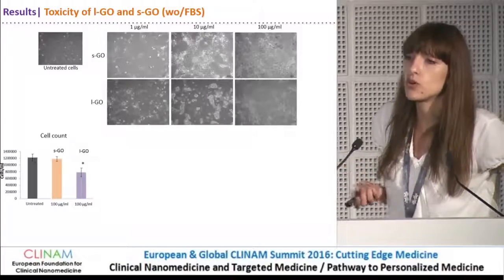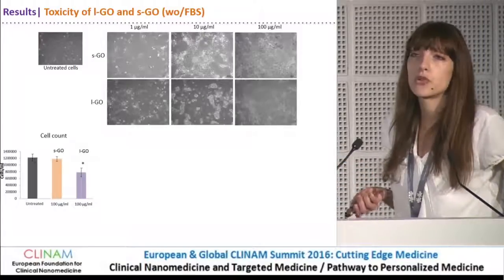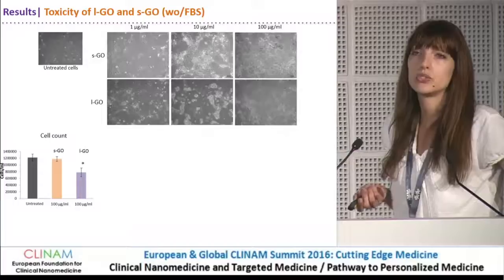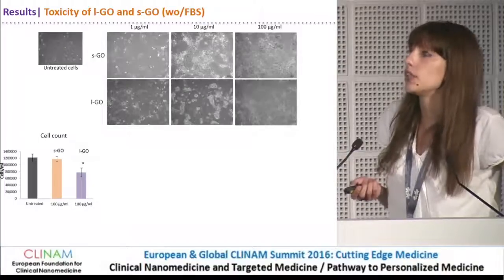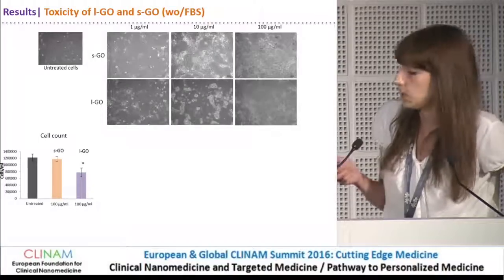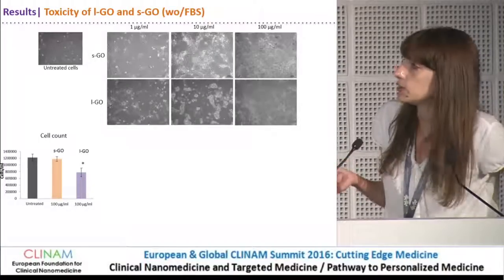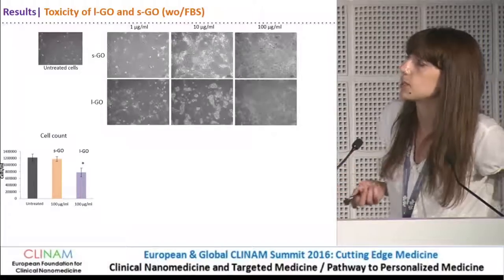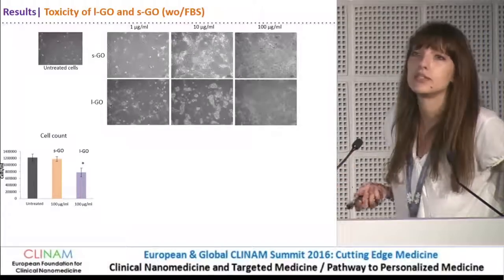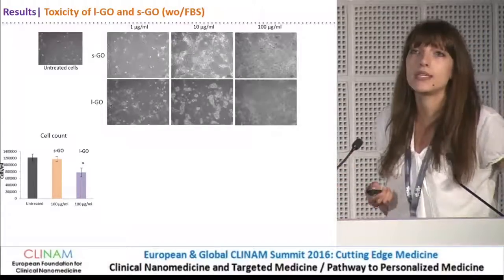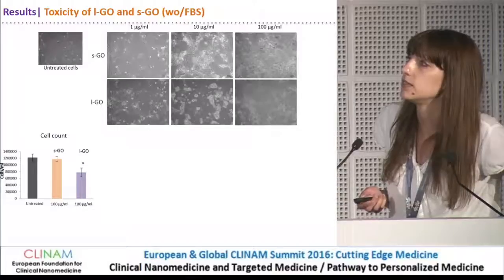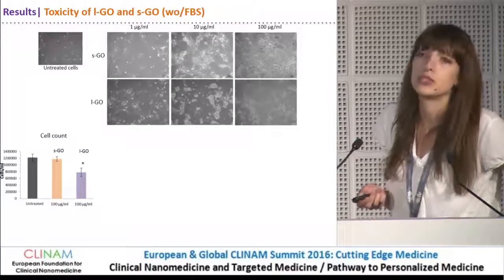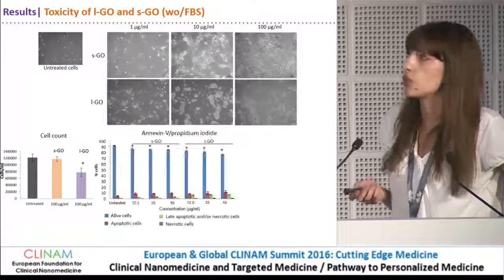In order to confirm this, we performed the cell count using Trypan Blue. And indeed, we saw that after treatment with the highest concentration of the material, there was a significant decrease in cell number compared to untreated cells or cells treated with the small graphene oxide.